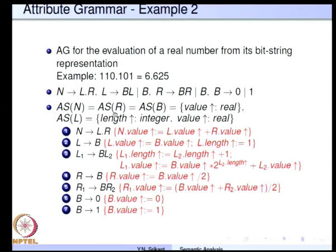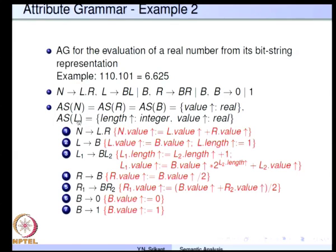This grammar generates binary strings with a dot in the middle, but gives no indication of the decimal value. The attribute grammar assigns the decimal value. Non-terminals N, R, and B have one synthesized attribute, value, from the domain of reals, whereas L has two synthesized attributes: length (from integers) and value (from reals). Two attributes are required for L because to assign the appropriate weight to a bit, we need to know the length of the string generated by L.